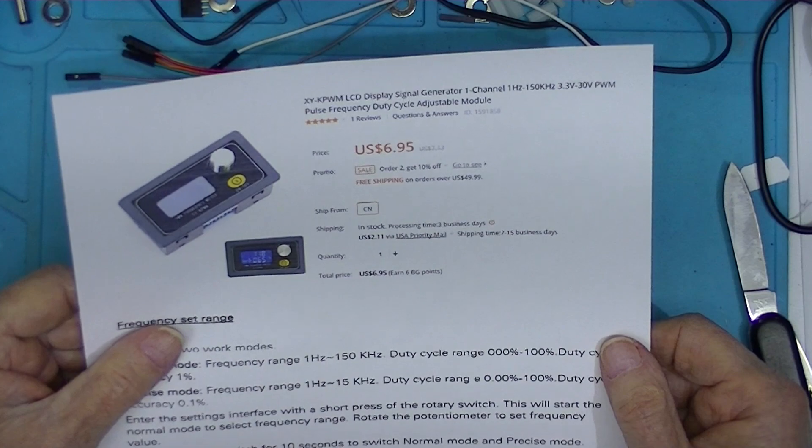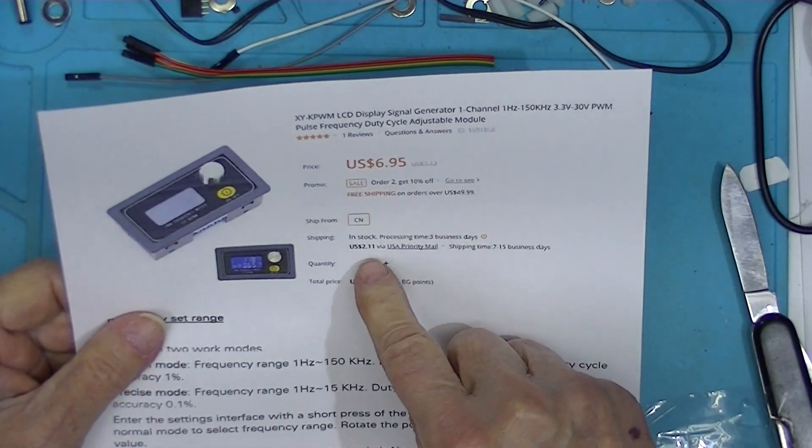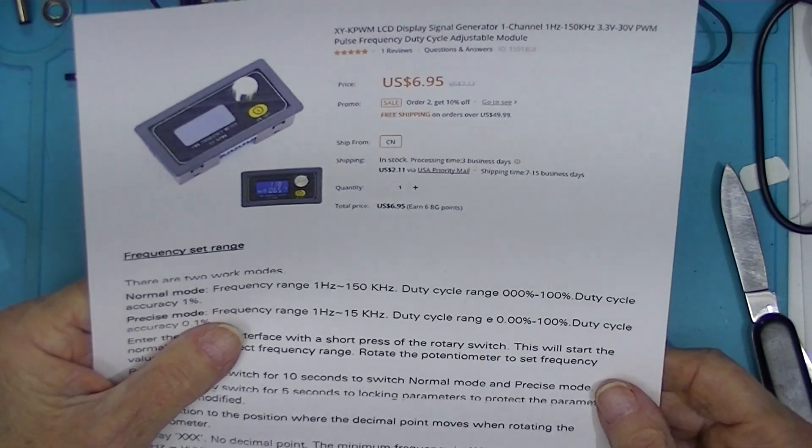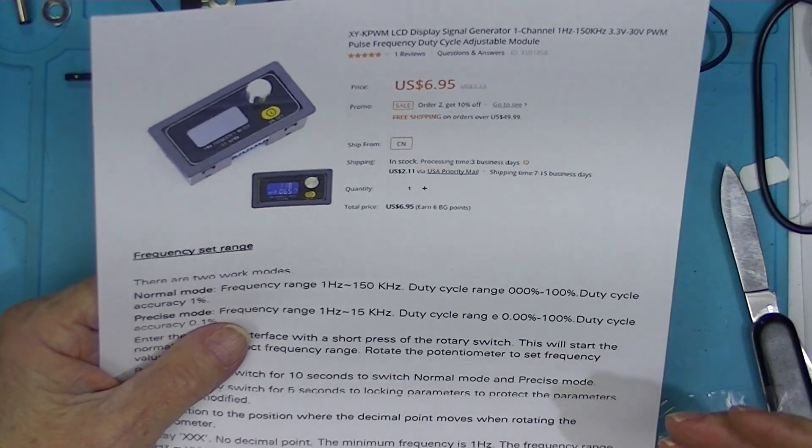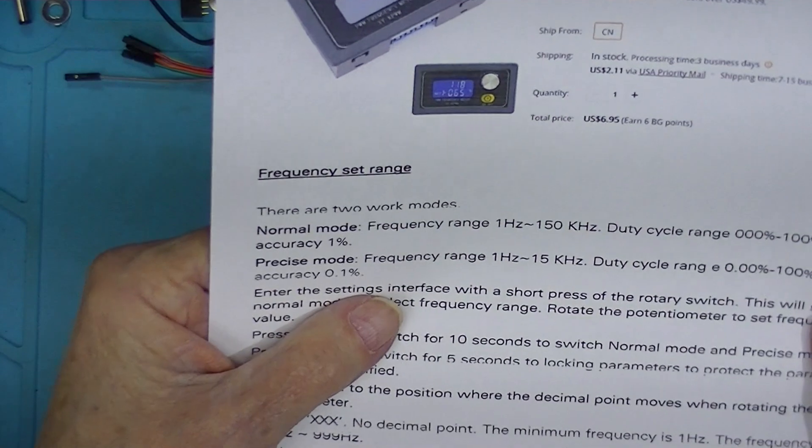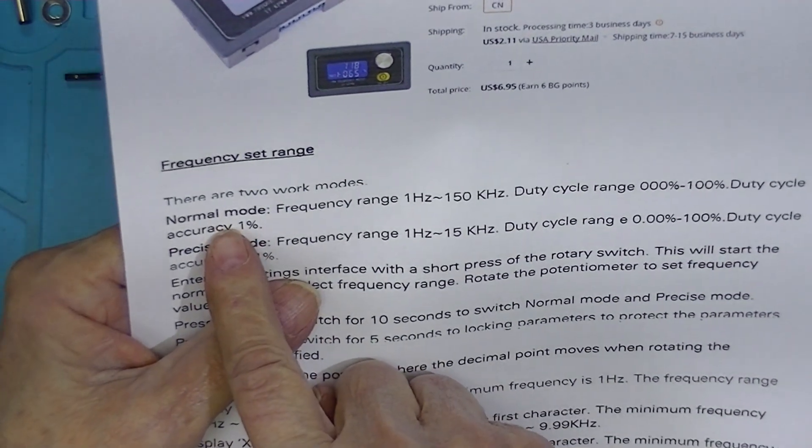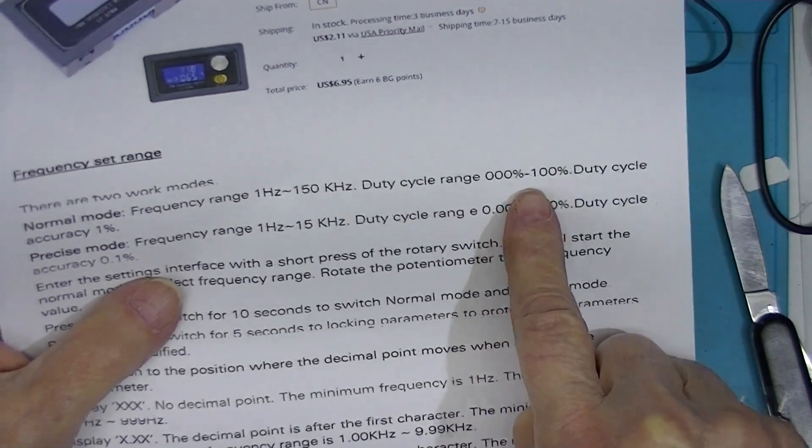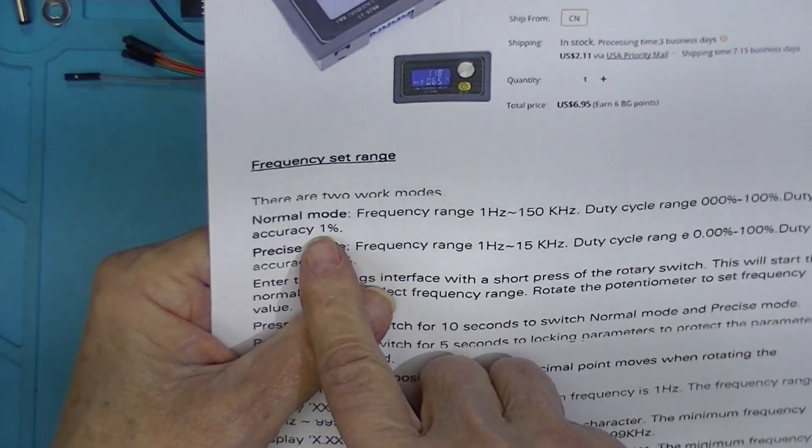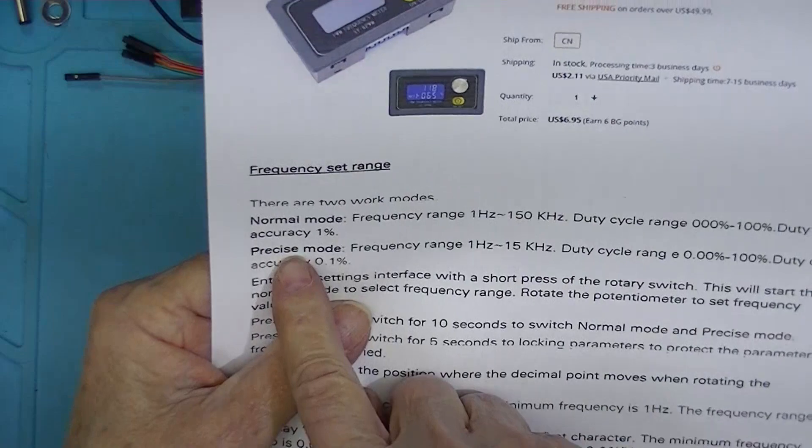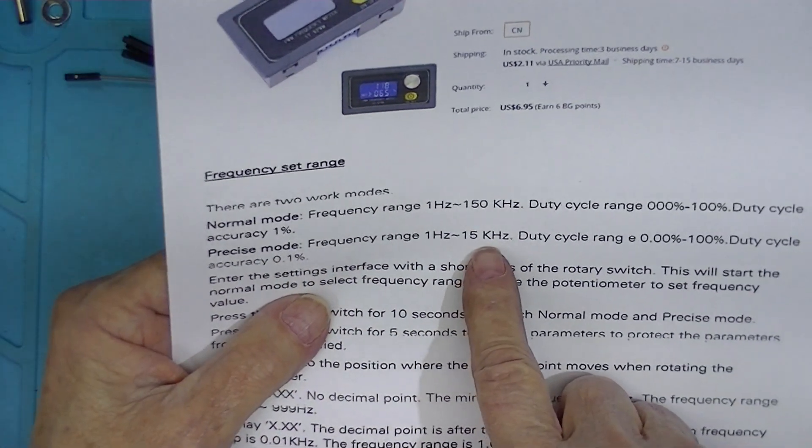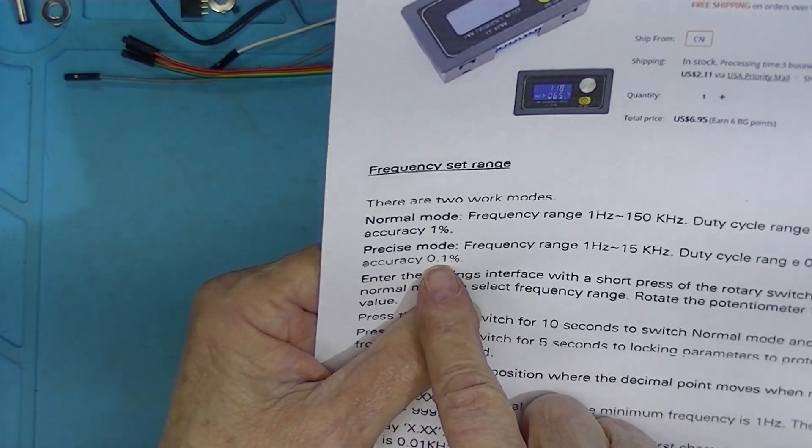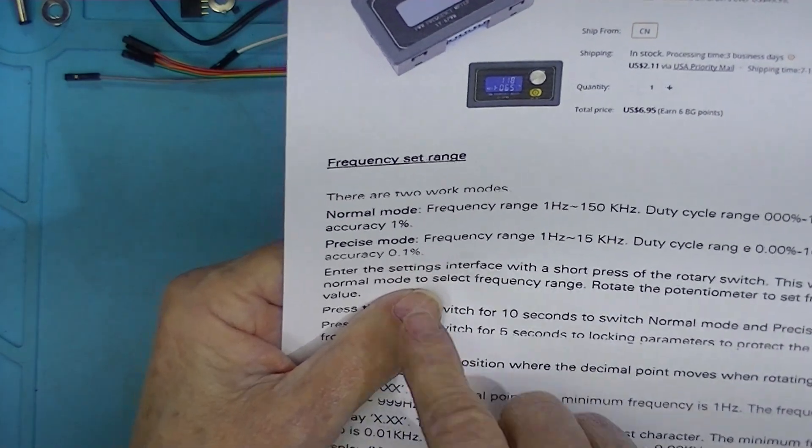The Banggood seller's page shows this for $7 plus $2 shipping. The only difference I can see in performance is that this Banggood unit has a normal mode with a frequency of 1 hertz to 150 kilohertz, and a duty cycle of 0 to 100 percent, and an accuracy of 1 percent, or a precise mode with a frequency range of 1 hertz to 15 kilohertz, same duty cycle, but an accuracy of a tenth of a percent.